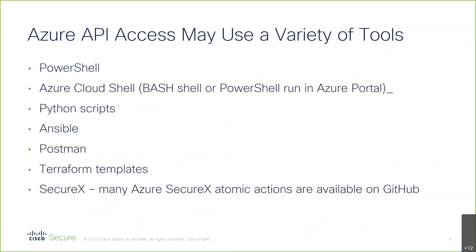Since everything's done with APIs, these are really just two methods of delivering APIs. There's also stuff in PowerShell, but I'm going to stay away from PowerShell to avoid making this too broad. There's something I'll show you called the Azure Cloud Shell. If you're into writing Python scripts to do your API stuff, that gives you more complex logic. There are Ansible modules for Azure. You could use Postman, or Terraform templates instead of ARM templates. We've also done a lot in SecureX — it's not built in, but we've got it on GitHub — so you could craft workflows in SecureX that make Azure calls and create resources. Pretty much your favorite way of doing APIs, you can apply to Azure.